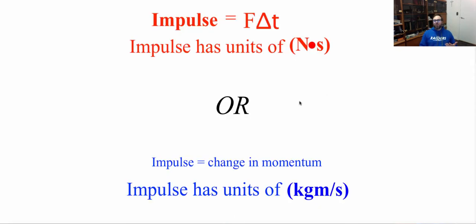Since impulse is equal to force times the change of time, impulse has units of newton seconds. Or, since impulse is just the change of momentum, impulse has the same units as momentum, which is kilograms meters per second.